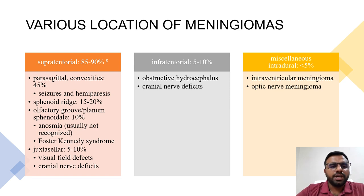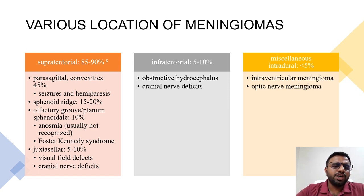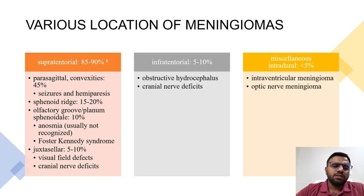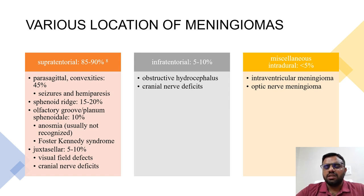Various locations of meningiomas: the most common location is supratentorial (85-90%), with parasagittal convexities accounting for 45%; symptoms include seizures and hemiparesis. Sphenoid ridge accounts for 15-20%; olfactory groove or planum sphenoidale 10%, with symptoms of anosmia and Foster Kennedy syndrome. Juxtasellar meningiomas account for 5-10%, presenting with visual field defects or cranial nerve deficits. The second most common location is infratentorial (5-10%), causing obstructive hydrocephalus or cranial nerve deficits. Miscellaneous types include intraventricular and optic nerve sheath meningiomas (less than 5%).